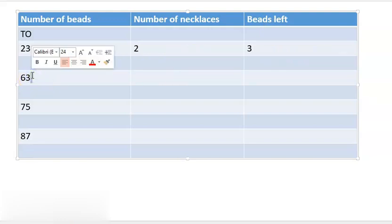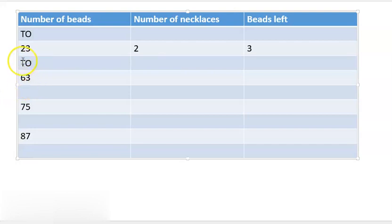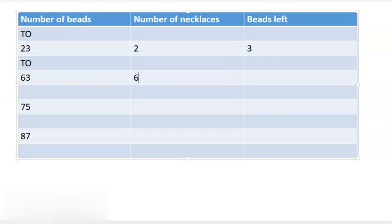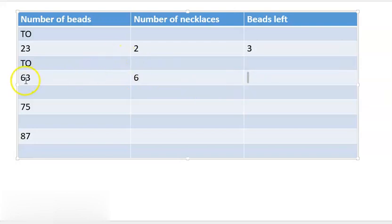Now the next number: the total number of beads she is having is 63. Again we write T for 10s and O for 1s. On the 6 we write T — T means number of necklaces — so that is 6. Here we will write 6. And for 1s, meaning beads left, on the 1s place we have the number 3, so here also we will write 3.